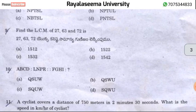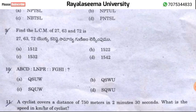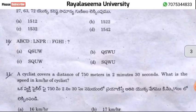Question number 9 involves the numbers 27, 63, 72. This is a common-type question. Moving on to question number 10.